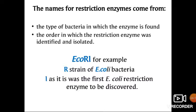The first letter of a restriction enzyme name is always capitalized and denotes the genus name. The next two letters are written in lowercase and represent the specific species name. The third element is the strain name, and the last element is a Roman numeral indicating the number of the enzyme secreted from that bacterium. For example, EcoRI: 'E' stands for Escherichia, 'co' stands for coli, 'R' is the strain, and 'I' is Roman numeral one.